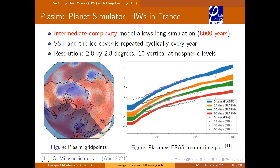The model we are using is called PLASIM, Planet Simulator. It's an intermediate complexity model that sometimes appears in the IPCC reports. Here I'm plotting the grid on top of the map of the Earth — the resolution is about 3 degrees by 3 degrees, which is quite coarse, about 100 kilometers. But it allows us to simulate this model for 8,000 years, which is a lot, and gives us a lot of statistics.